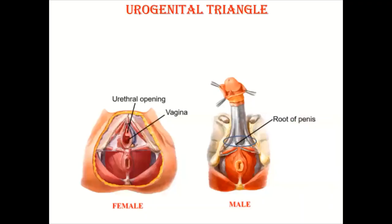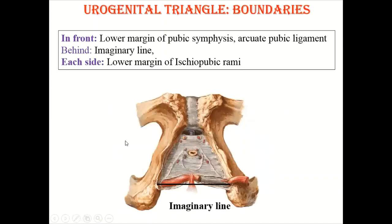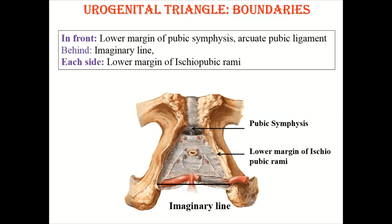The urogenital triangle is the anterior triangle which contains the roots of the external genitalia and openings of the urogenital system — you can see the urethral opening and vaginal opening. The boundaries of the urogenital triangle are: in front, the lower margin of the pubic symphysis and arcuate pubic ligament; behind, an imaginary line; and on each side, the conjoined ischiopubic rami.